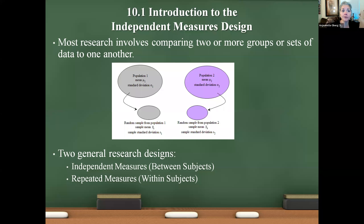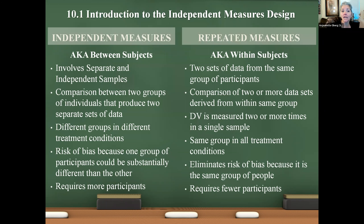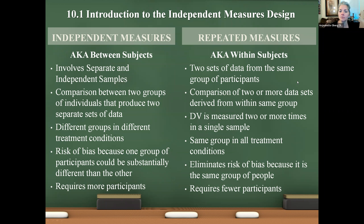When you have different people in each group, that's what we call a between-subjects design, which uses an independent measures or independent samples test. When you're comparing two groups to one another, that's a t-test. You have to know how many groups you're comparing, and then who's in those groups. Are they the same people? If so, that's a within-subjects design using a repeated measures T. If there are different people in those groups, that's a between-subjects design and we use an independent measures t-test.